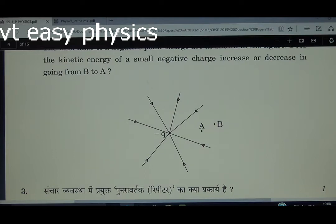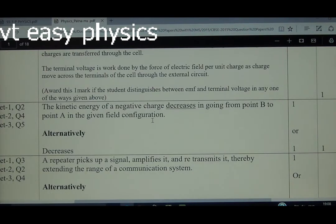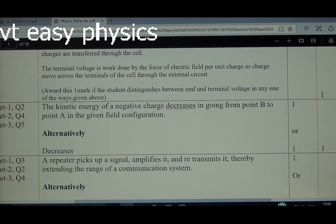Initial potential energy, final potential energy, and then the difference. The kinetic energy of a negative charge—but here kinetic energy they are asking. The negative charge decreases in going from B to A. As negative charge moves towards negative, it loses its kinetic energy and its potential energy increases. Alternatively, if you write only what decreases, then you get full credit.